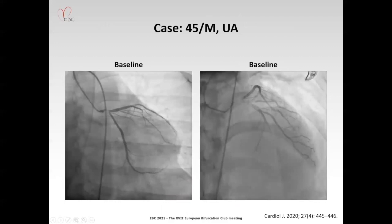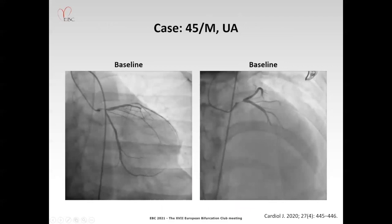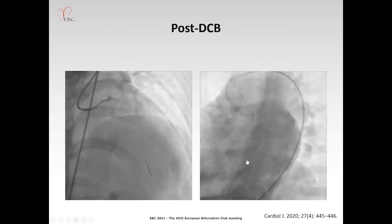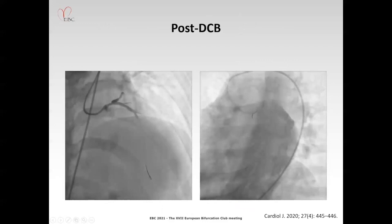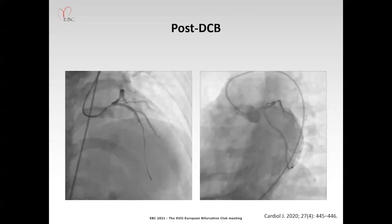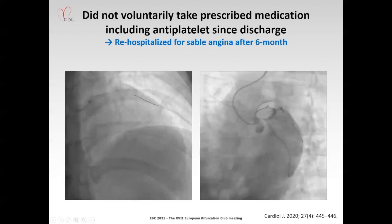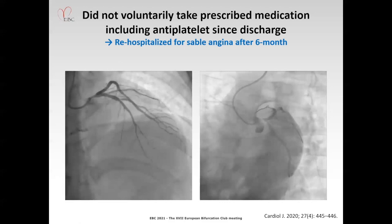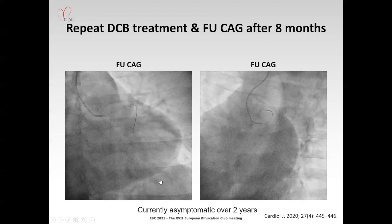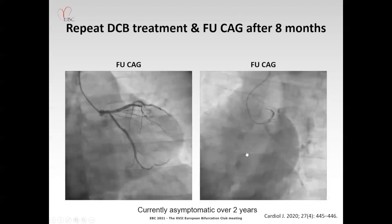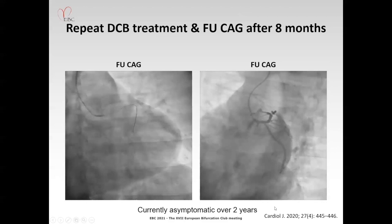This is a target lesion revascularization case — a 45-year-old man with very tight stenosis of left main shaft and decreased antegrade flow, TIMI II flow. After balloon angioplasty and drug-coated balloon treatment, the lumen increased significantly and the flow was normalized to TIMI III, and his angina was gone. However, the patient had a follow-up loss after discharge and voluntarily discontinued all drugs including antiplatelet drugs. After six months, chest pain developed and left main disease recurred. Because he had poor compliance, we retreated the lesion with a drug-coated balloon. Follow-up coronary angiogram showed good results without recurrence after eight months, and he now has no symptoms.